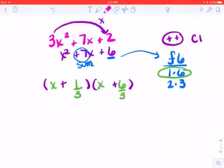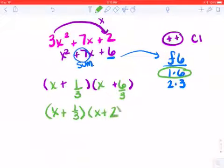Now, if I were to put these in my calculator, I want to see if either one of these are going to reduce. So on the first one, there's no reducing that happens. It stays as one-third. On the second one, six divided by three is going to be two.